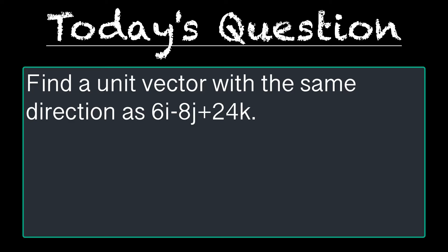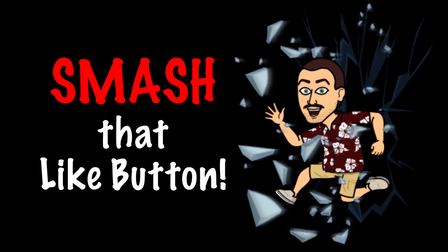The question we're working on today is, find a unit vector with the same direction as 6i minus 8j plus 24k. Smash that like button and let's get started.